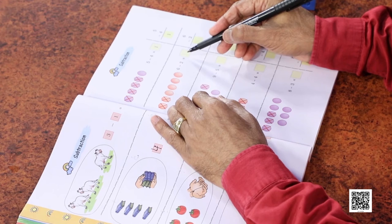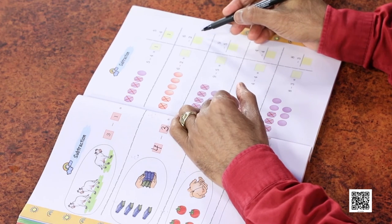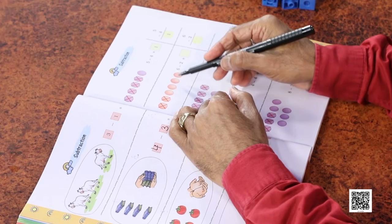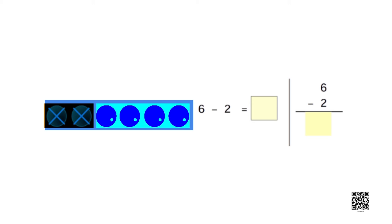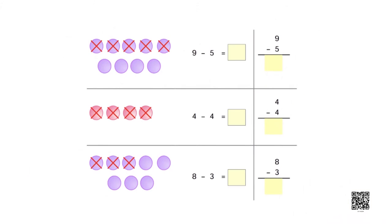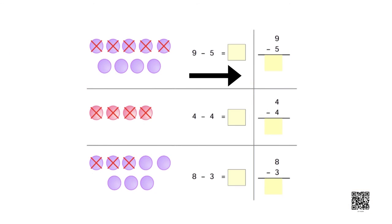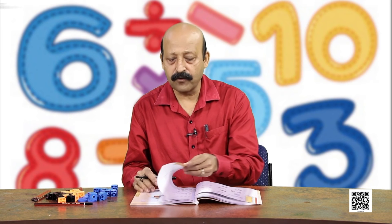You have to fill in a number on the blank. We can use pictures: there are 1, 2, 3, 4, 5, and 6. Out of 6, 2 have been taken away. How many are left? 1, 2, 3, 4. So I write 4. Rest of the questions you have to do yourself. I request parents and teachers to give children many such problems — both horizontally and vertically — so they have lots of practice finding what is left.